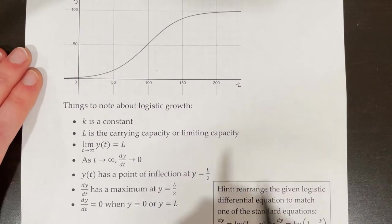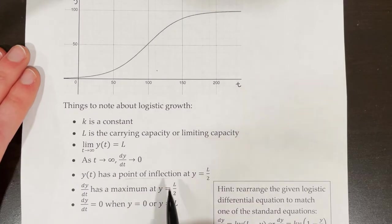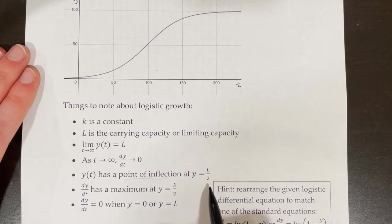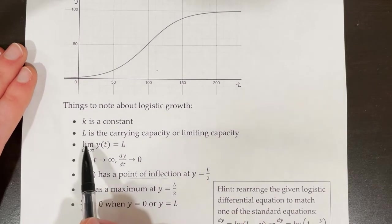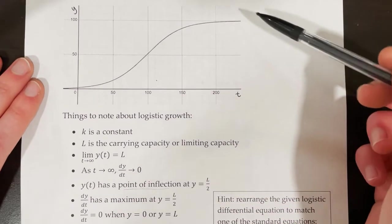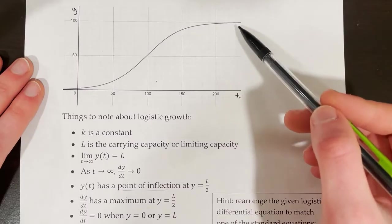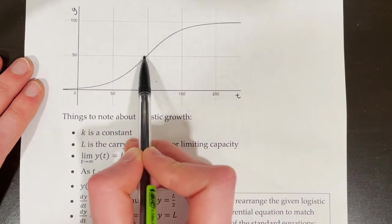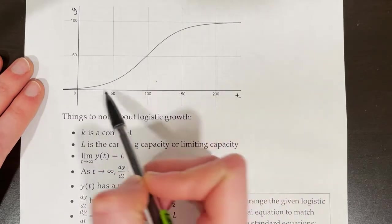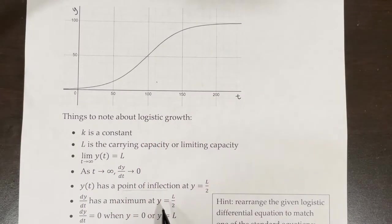y(t) has a point of inflection — meaning it's changing from concave down to concave up or vice versa — at y equals L over 2. L is the carrying capacity, so we take the carrying capacity and divide it by 2. In this case, y(t) has a point of inflection at y equals 50, which is where our graph is changing from concave up to concave down. That's true for all functions modeled by logistic differential equations.